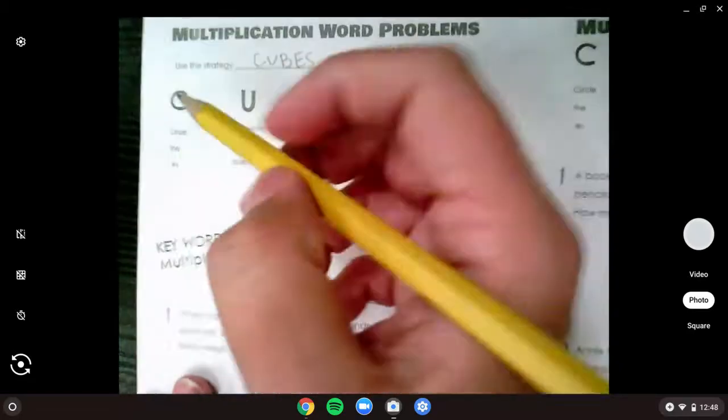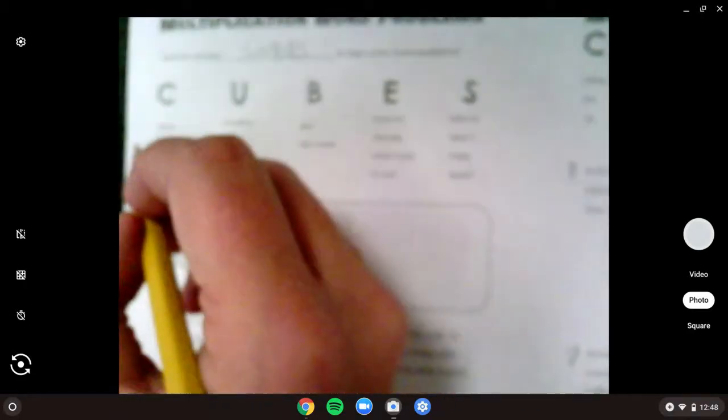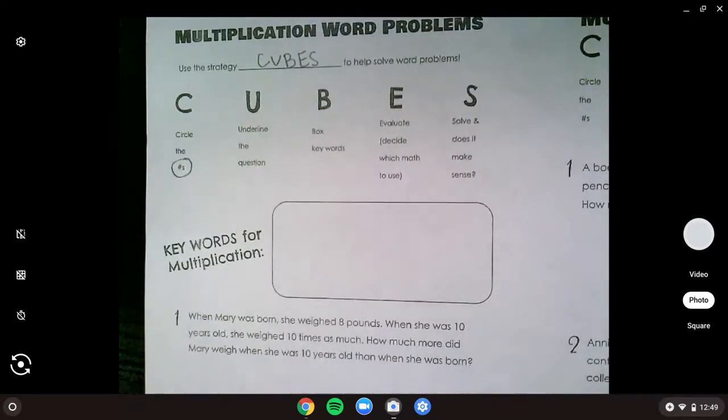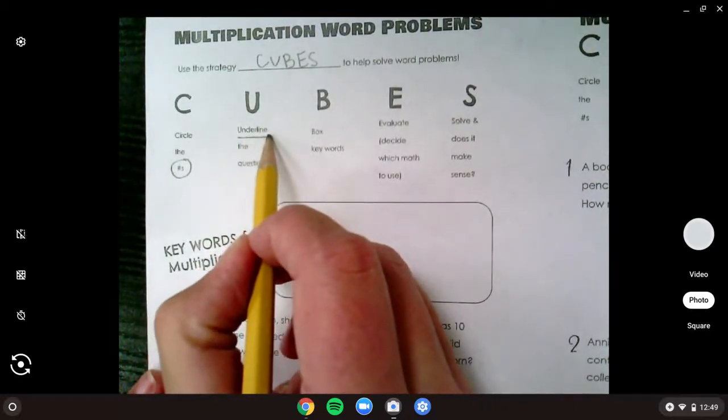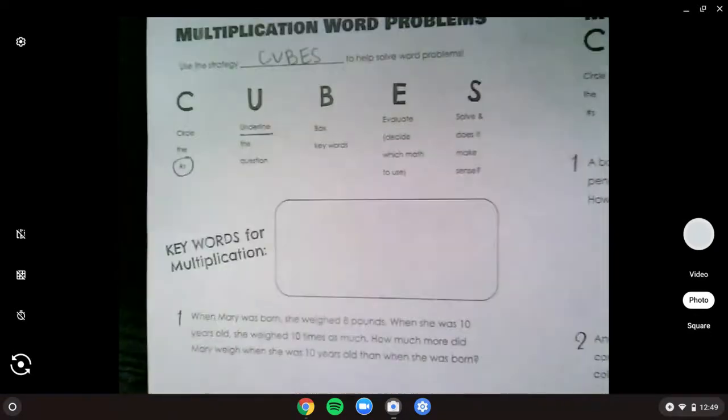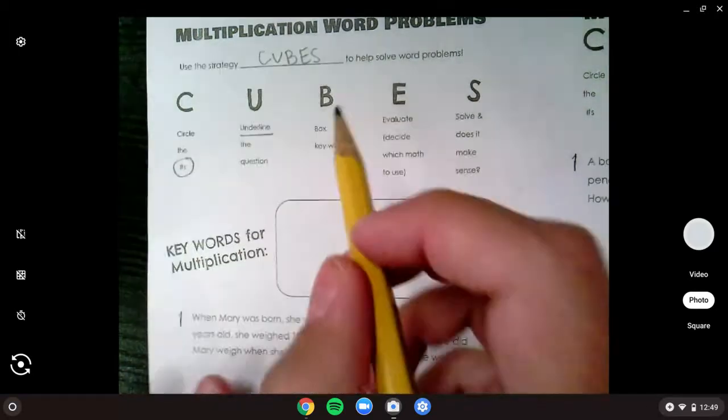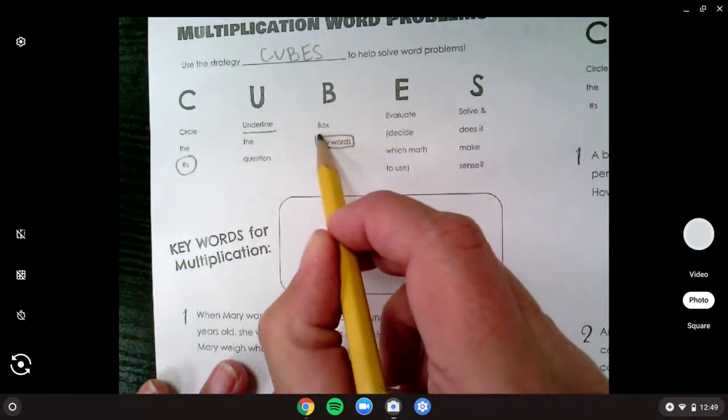The C means we're going to circle the numbers. I would circle that number sign there to help remind us that the C means circle. The U means to underline our question. Let's underline, underline.